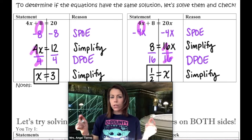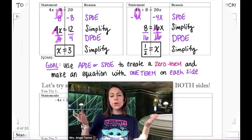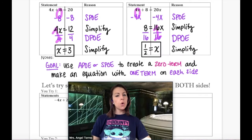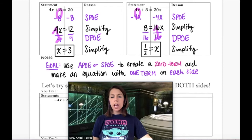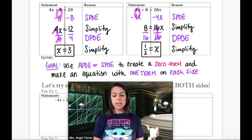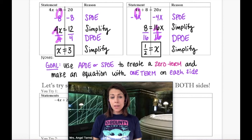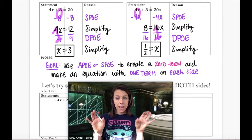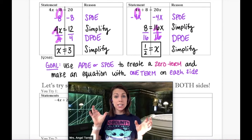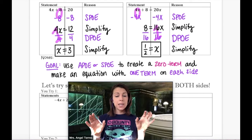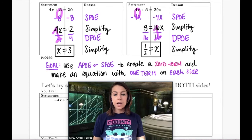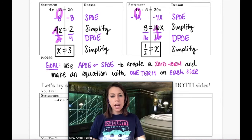Let's take some notes on what we just did. In both equations, the goal was to use the addition or subtraction property of equality to create a zero term and get down to one term on each side. If you can get any equation down to a single term and a single term, most of the time it's going to be DEPO and done — sometimes EMPO and done — but it makes the math a lot easier. Keeping this goal in mind, let's try a few more.